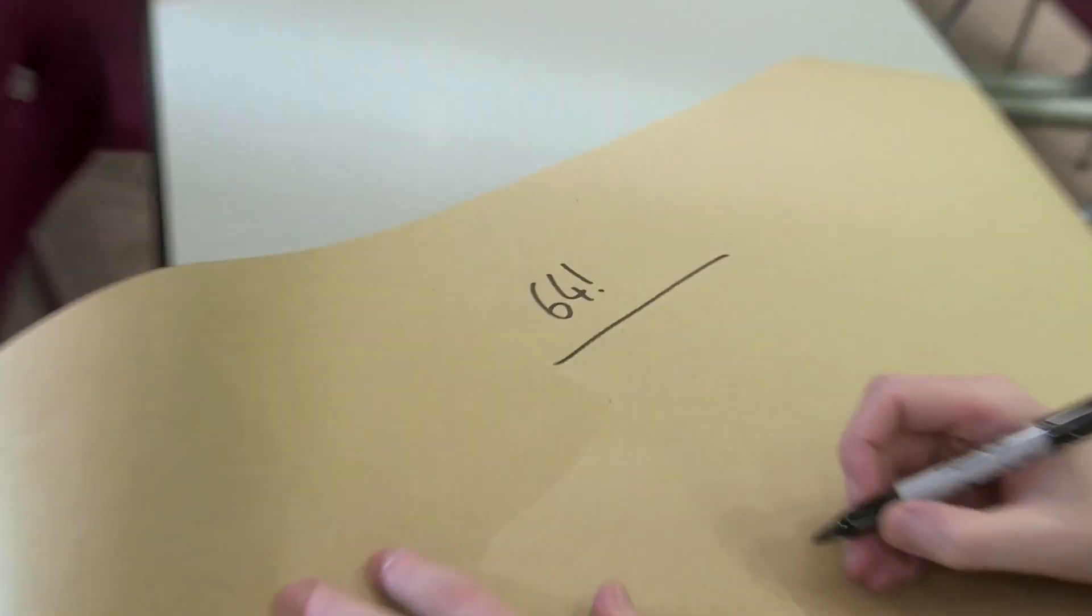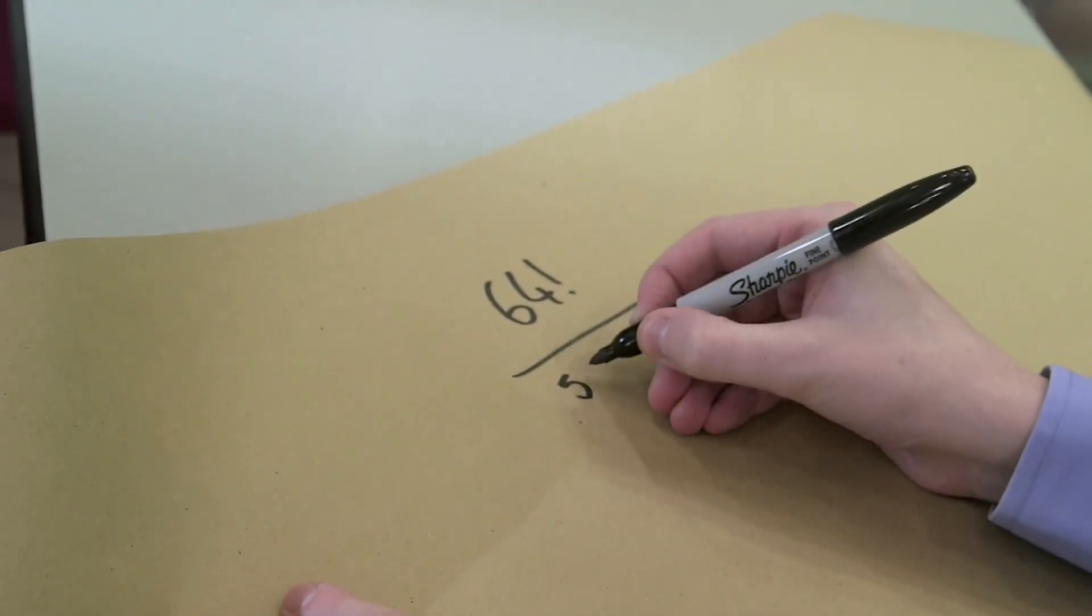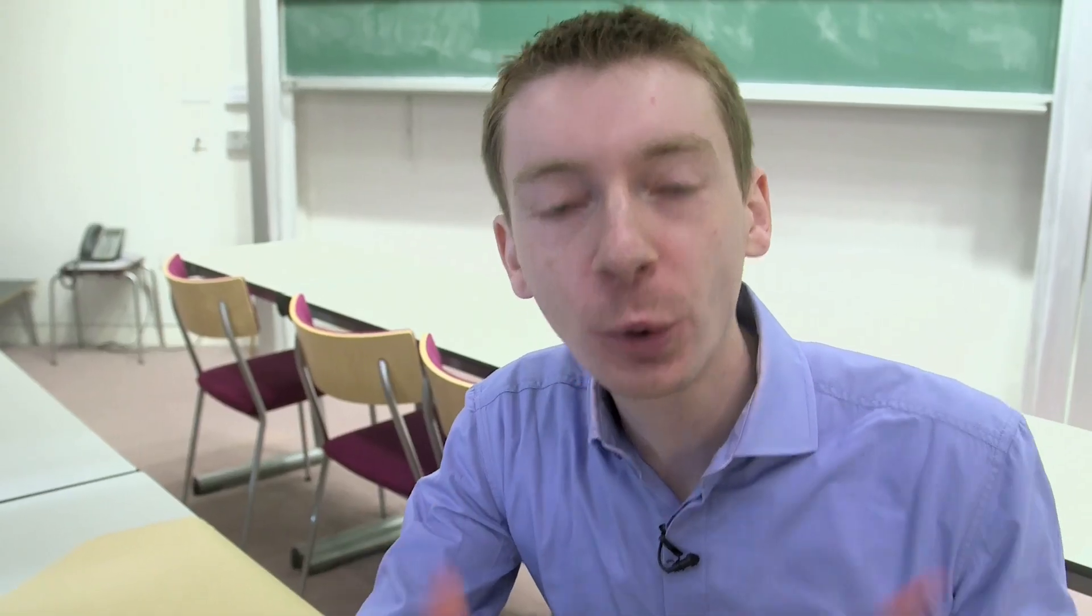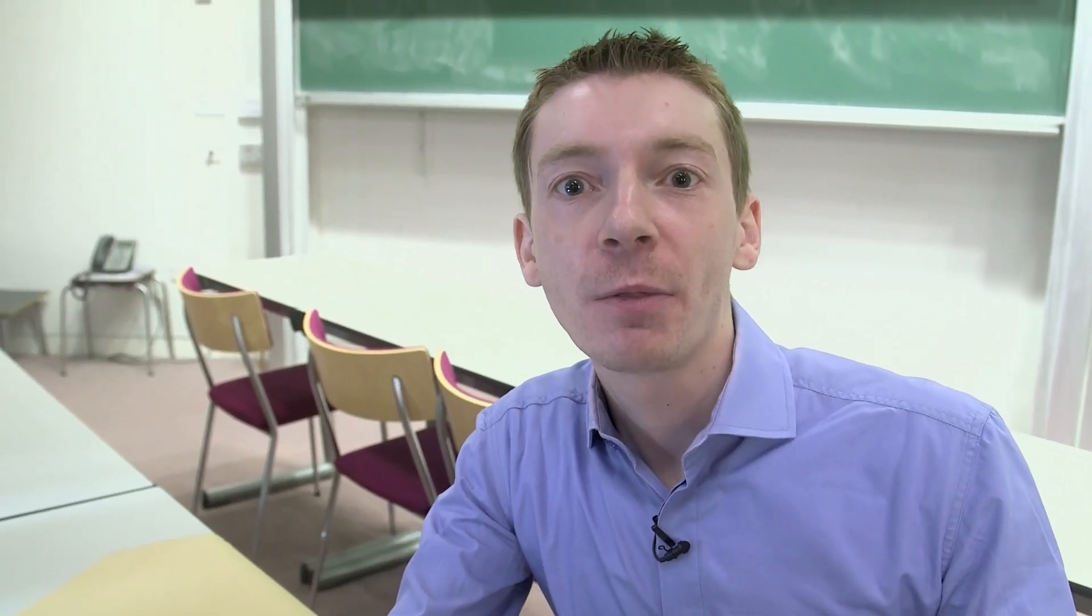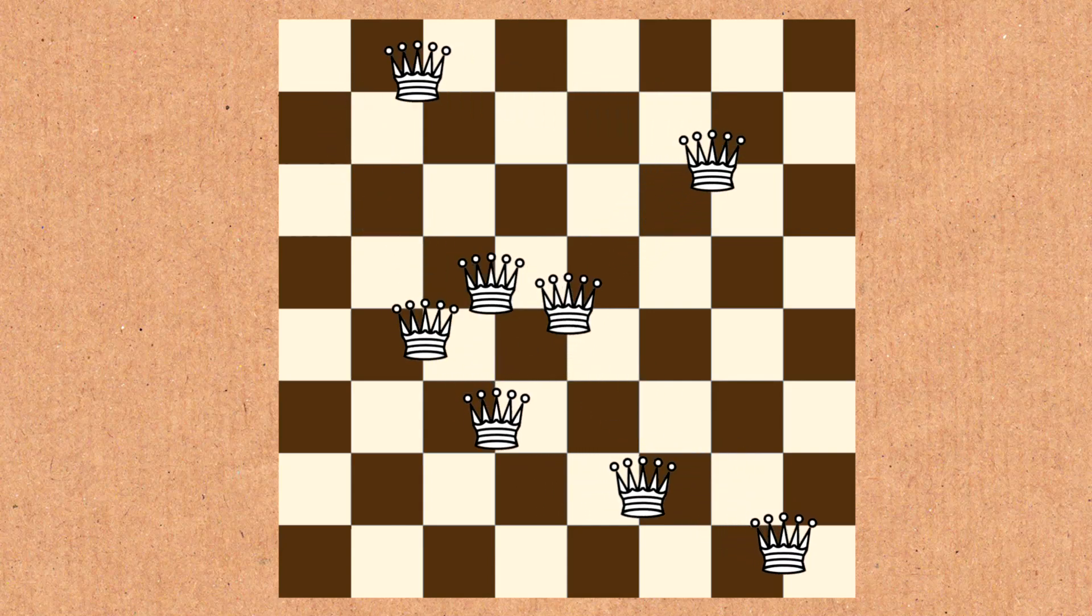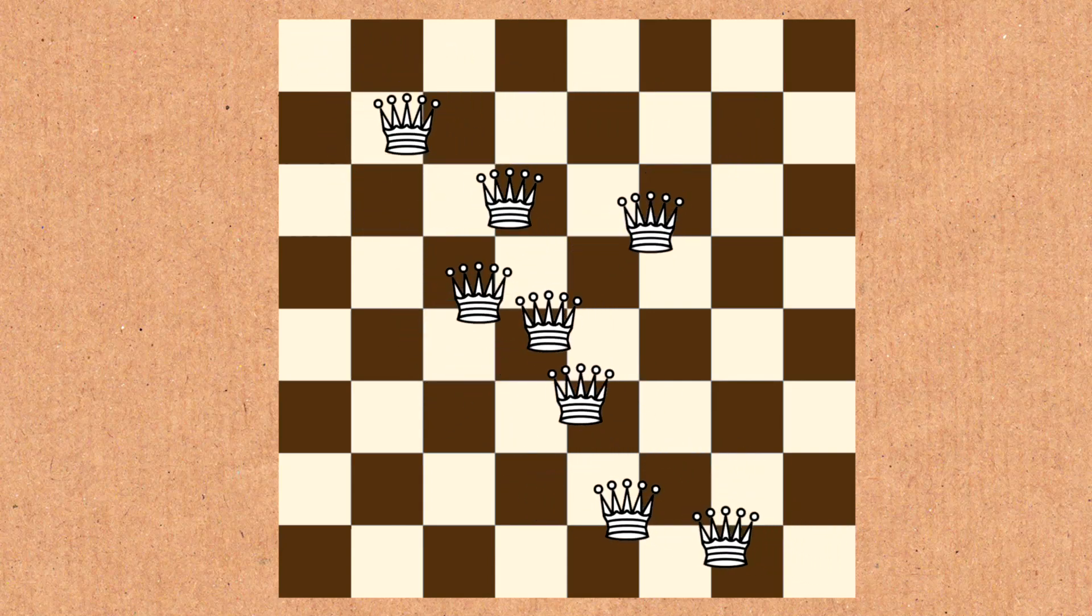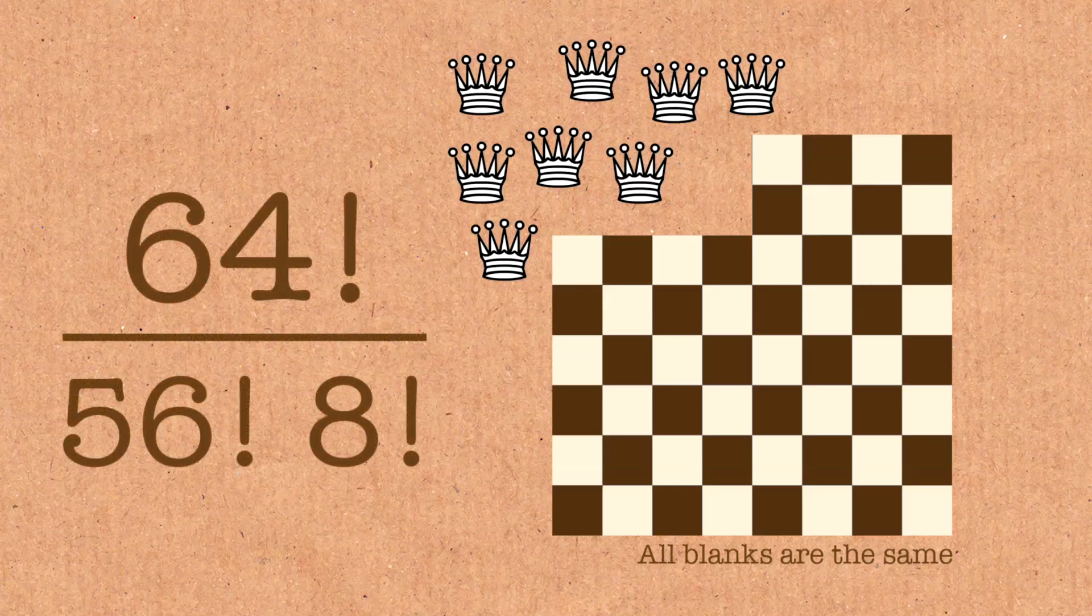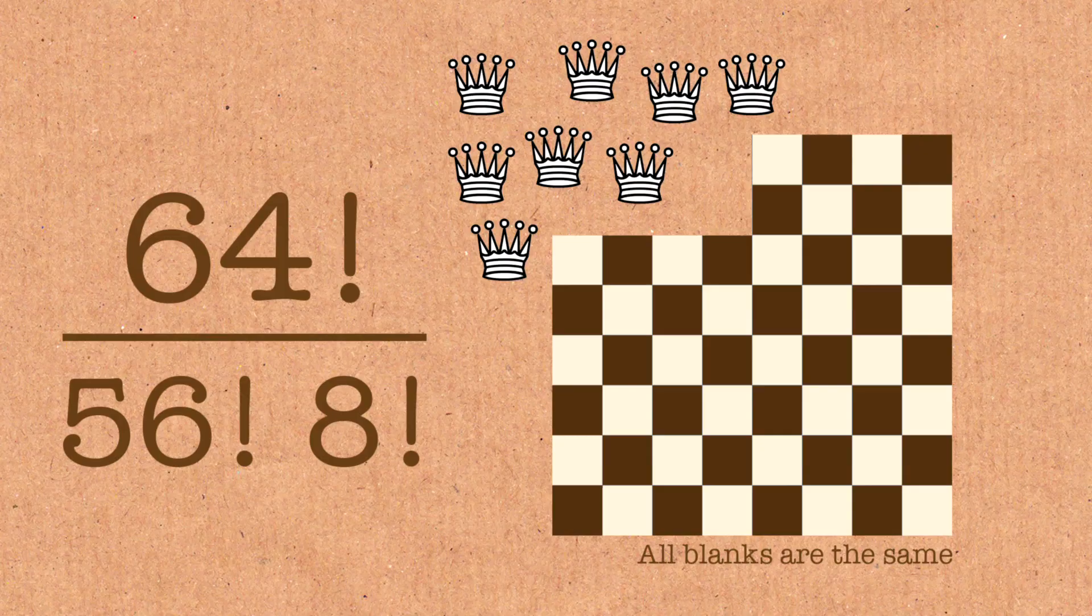But you can rearrange the blanks between themselves and it doesn't change the position on the board. So we're going to divide by how many blanks there are, 56 factorial ways to arrange the blanks. We have to consider that the queens are the same. So I can move the queens between each other, I can commute the queens between each other and it doesn't affect the solution, the positions they are on the board. So for that reason, we are also going to divide through by 8 factorial. There are 8 queens and they can be swapped around between each other.